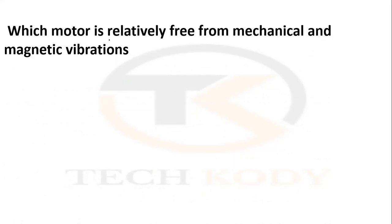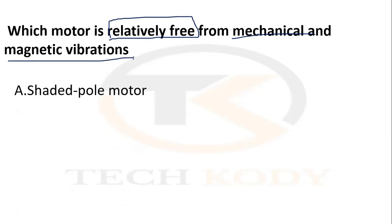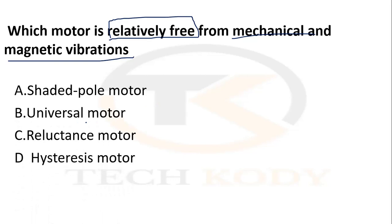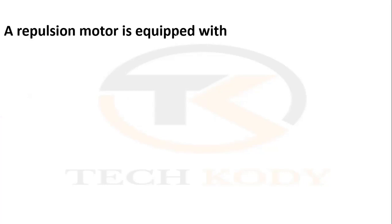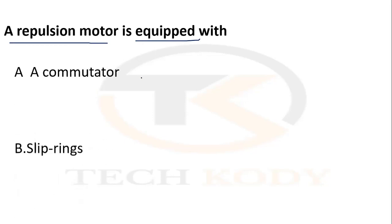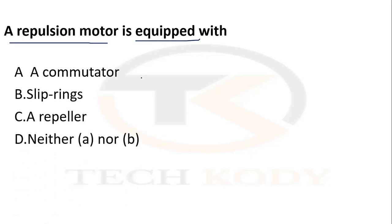Which motor is relatively free from mechanical and magnetic vibration? The options are: shaded pole motor, universal motor, reluctance motor, and hysteresis motor. The answer is the hysteresis motor — it is relatively free from mechanical and magnetic vibration. A repulsion motor is equipped with a commutator.